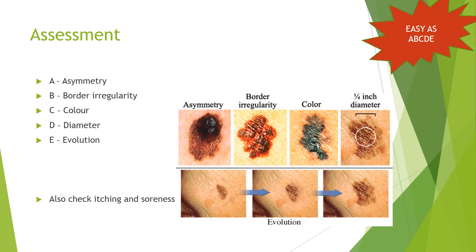Assessment for skin cancer, particularly melanoma, can be done using the ABCDE acronym — helpful to remember for your NCLEX. The A stands for asymmetry; as you can see in this picture, the mole is not symmetrical in any way. The B stands for border regularity — you can see the jagged, faded edges; it's not a specifically defined mole.